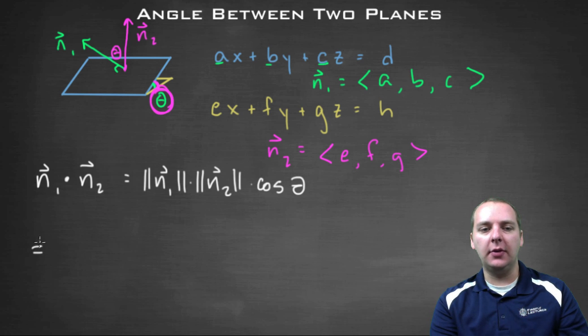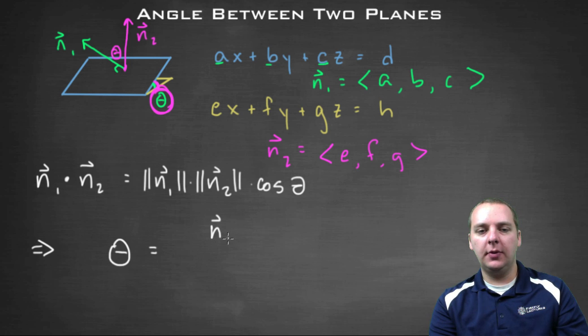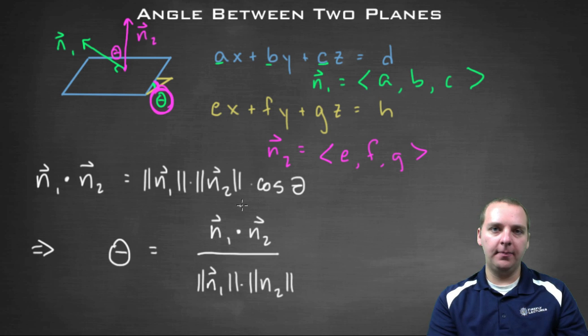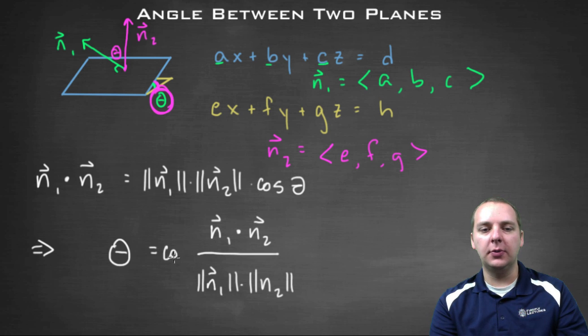And then after a little algebra, which I'm going to skip some of the algebra, to get your theta, you would take N1 dot N2 divided by both of these magnitudes, magnitude of N1 times the magnitude of N2. And then you'll take the arc cosine of that to solve for your theta. So I'll have cosine inverse of this stuff here.